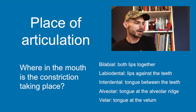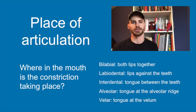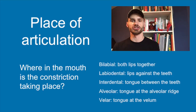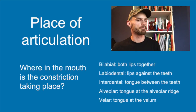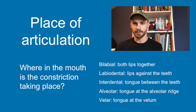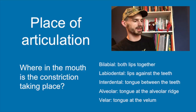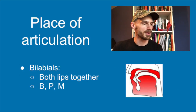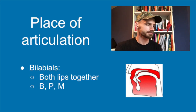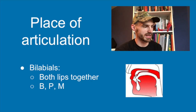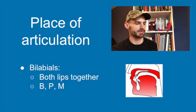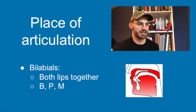Place of articulation is the next criterion we need to know in order to describe speech sounds. Place of articulation just means what place in your mouth a constriction is taking place to cause that sound. We have bilabial sounds — 'labial' meaning lips and 'bi' meaning two, so bilabial means both of your lips are together. In English, the only bilabials are b, p, and m. You can see in the sagittal view of the face that the lips are together, causing an obstruction to the airflow.